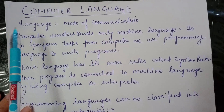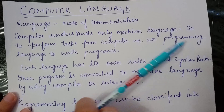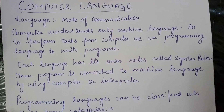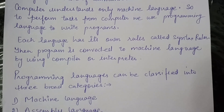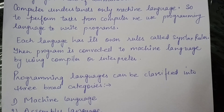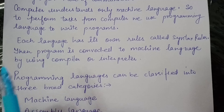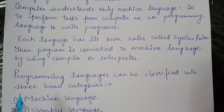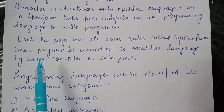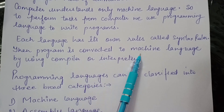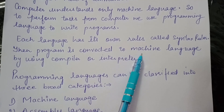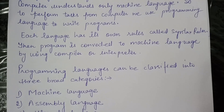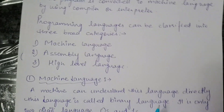From the notes: language is a mode of communication. A computer understands only machine language, so to perform tasks we use programming language to write programs. Each language has its own rules called syntax rules, and then the program is converted to machine language by using a compiler or interpreter — just like our language has its own rules, computer language has its own rules. Broadly we can classify programming languages into three categories: machine-level language, assembly language, and high-level languages.